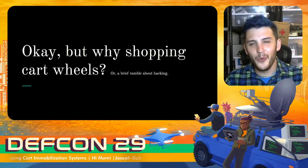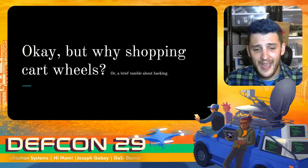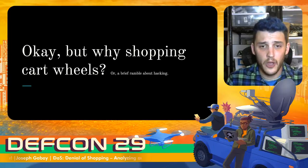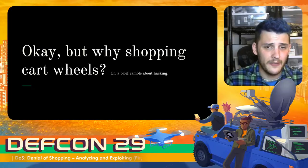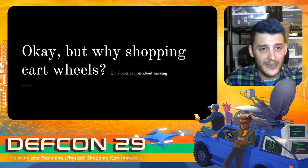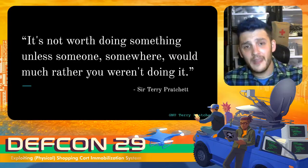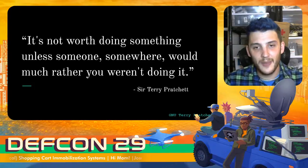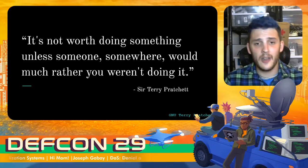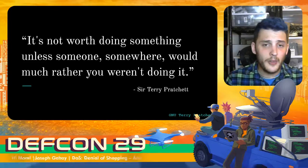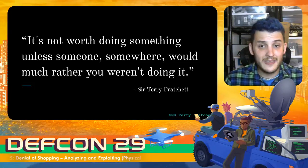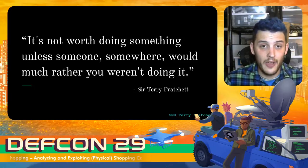You might be wondering: why shopping cart wheels? Why was this a rabbit hole I decided to go down? The first time I saw one of these signs — a warning that these devices were in use — I got really curious. How does the wheel know it's outside of an approved boundary? How does it actually lock? How does it get power? All of these questions led me to research, which led to more questions, and that led to a DEF CON talk. I think it can be summed up by Terry Pratchett's quote: it's not worth doing something unless someone somewhere would much rather you weren't doing it. A bunch of very smart people spent a lot of time and money designing a system to prevent people from doing something, and I was curious to see whether I could overcome and dissect it.